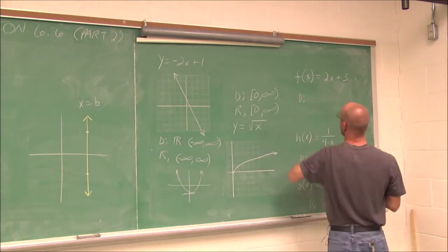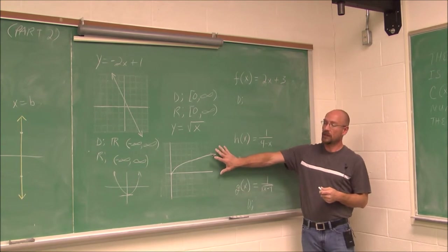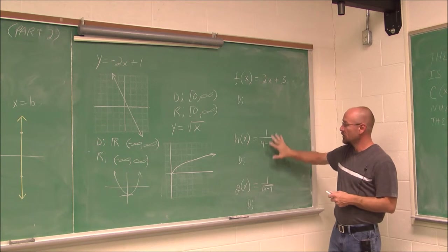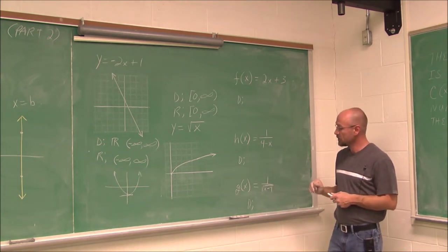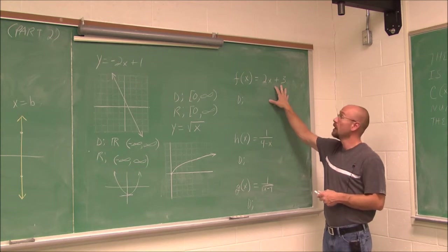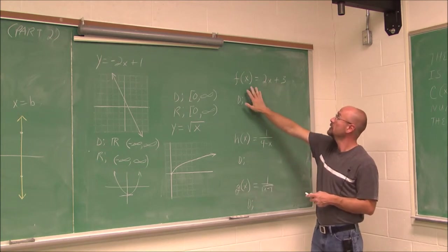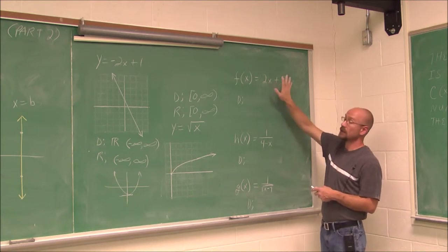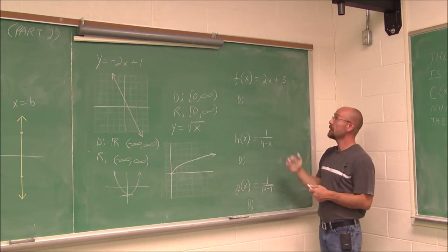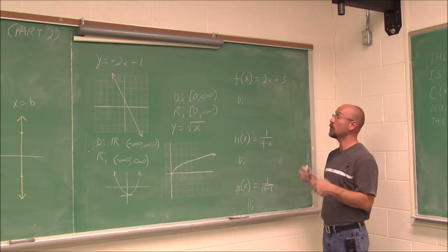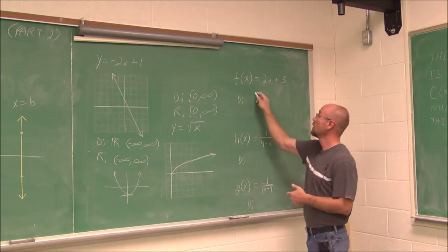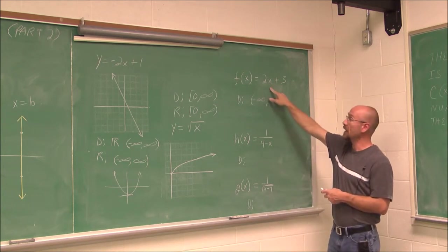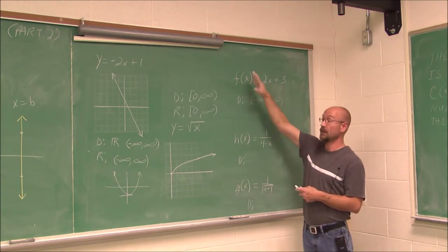At this level of algebra, we can determine the range from a graph, but we're not yet ready to determine range from the function itself, so I'll ask you to determine the domain given the function. We have f(x) = 2x + 3. We recognize that as a line in slope-intercept form — not a vertical line — so its domain is all real values, from negative infinity to positive infinity, because we can put in any value of x and do the math to get a value of y.